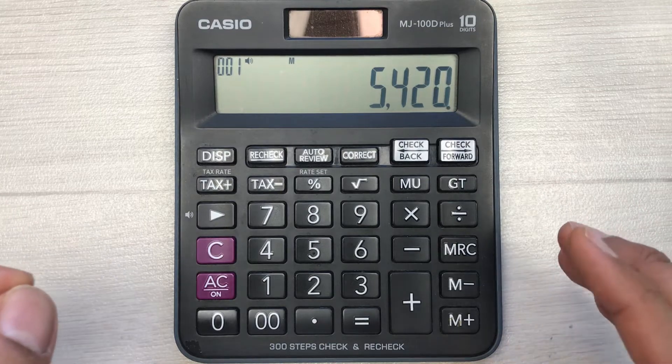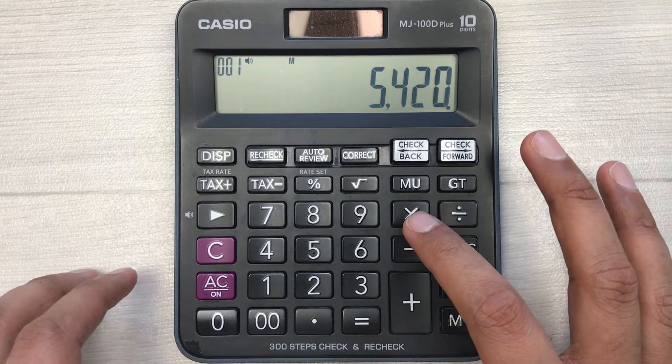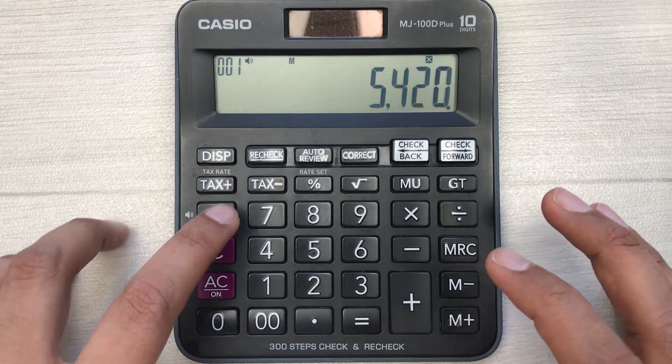You can find it out in two simple steps. First of all, you have to press this multiply button, and then you have to multiply it with 70.